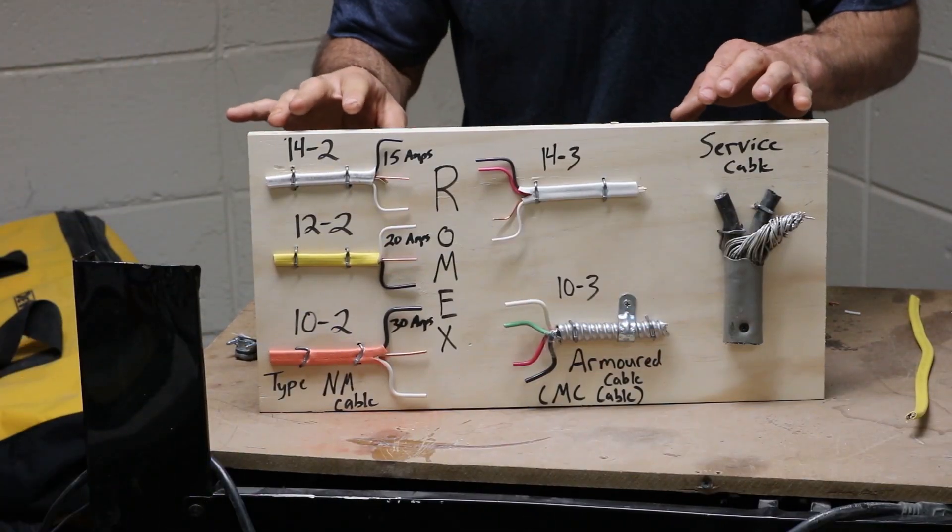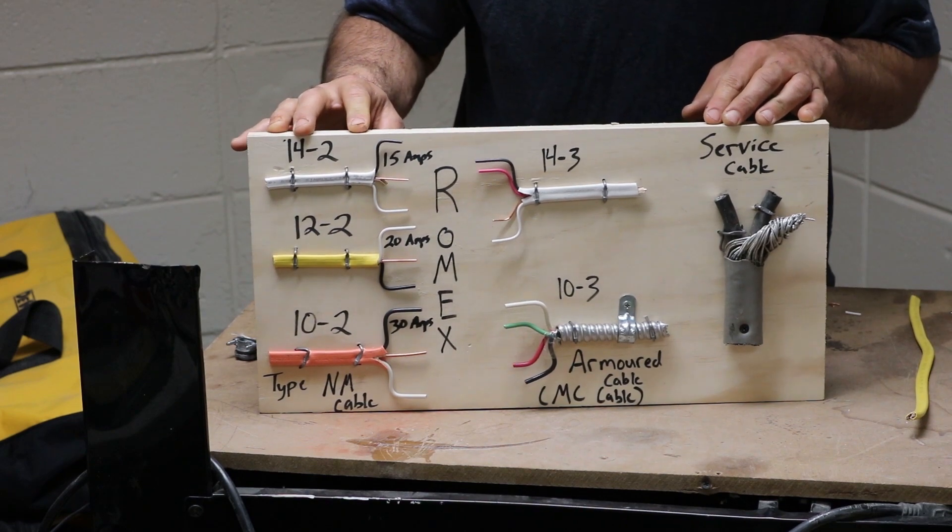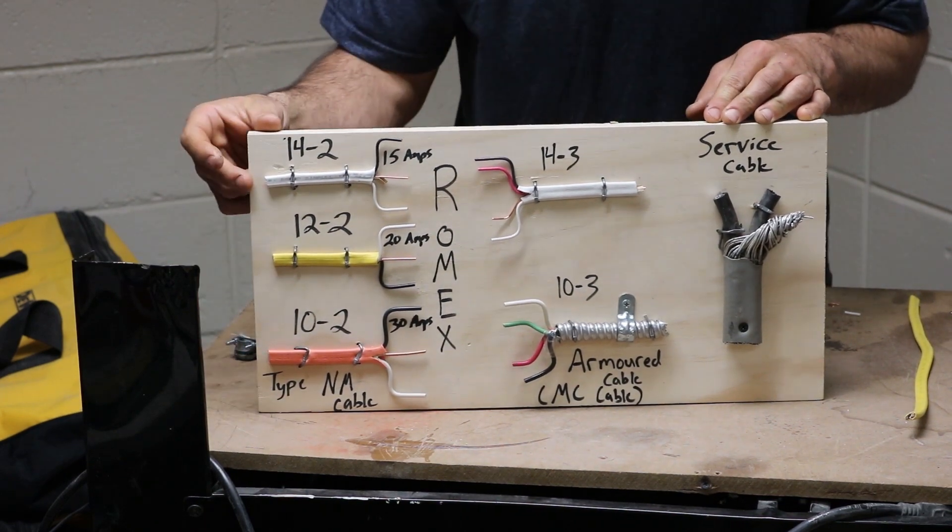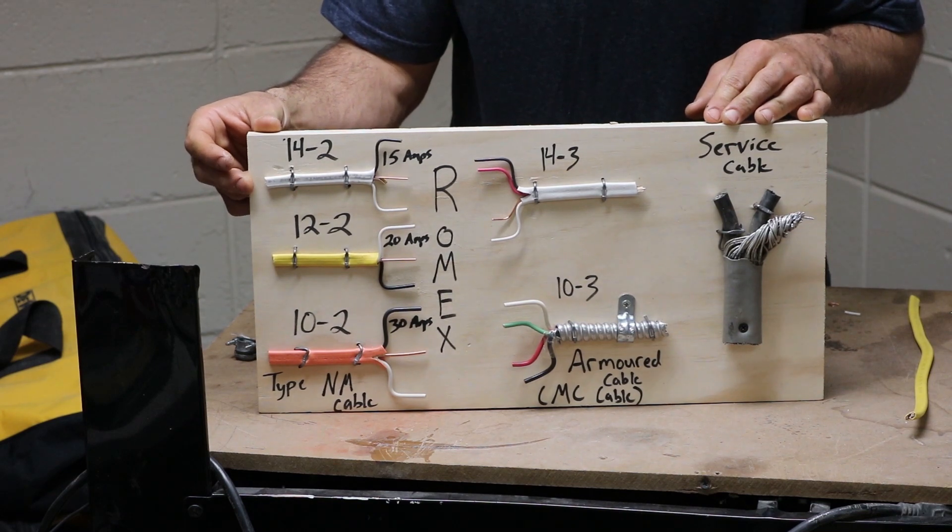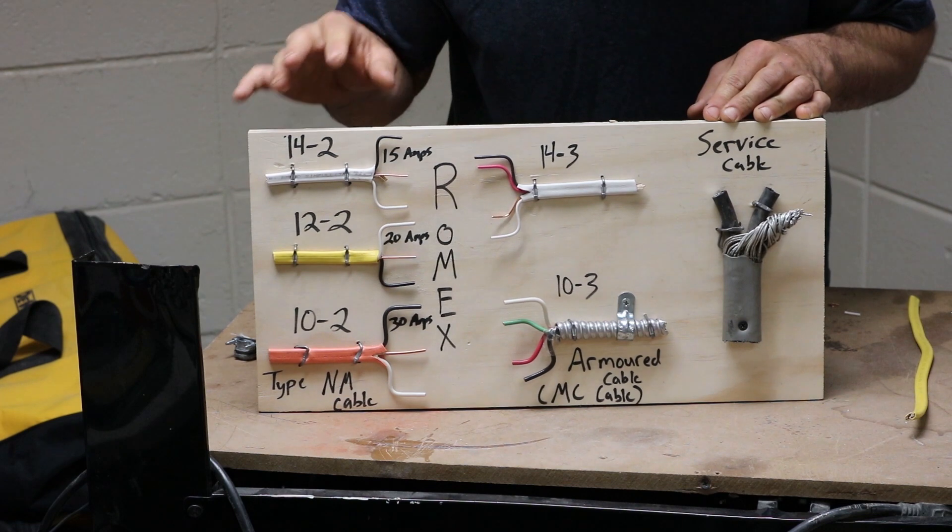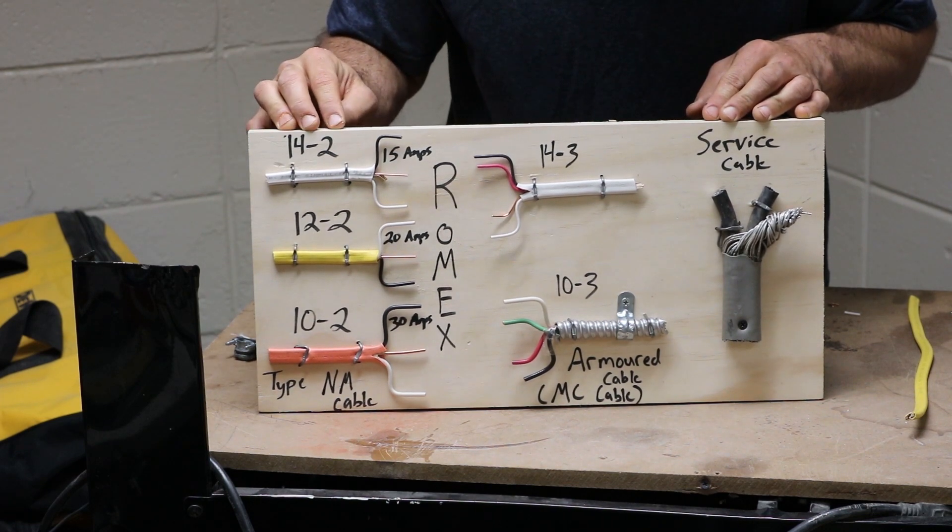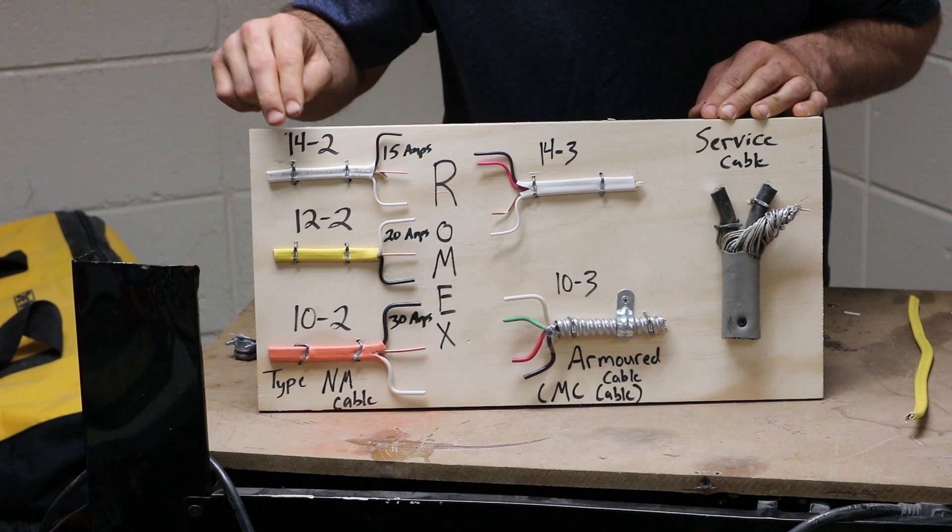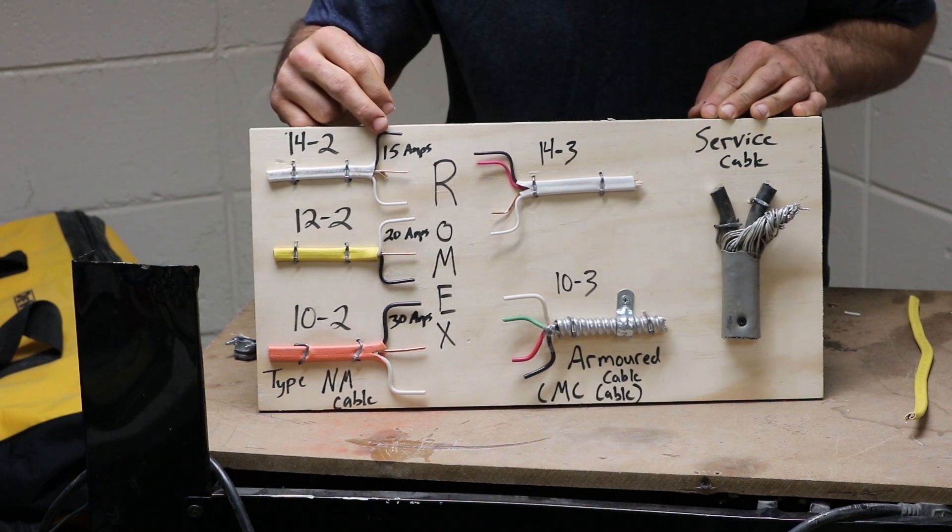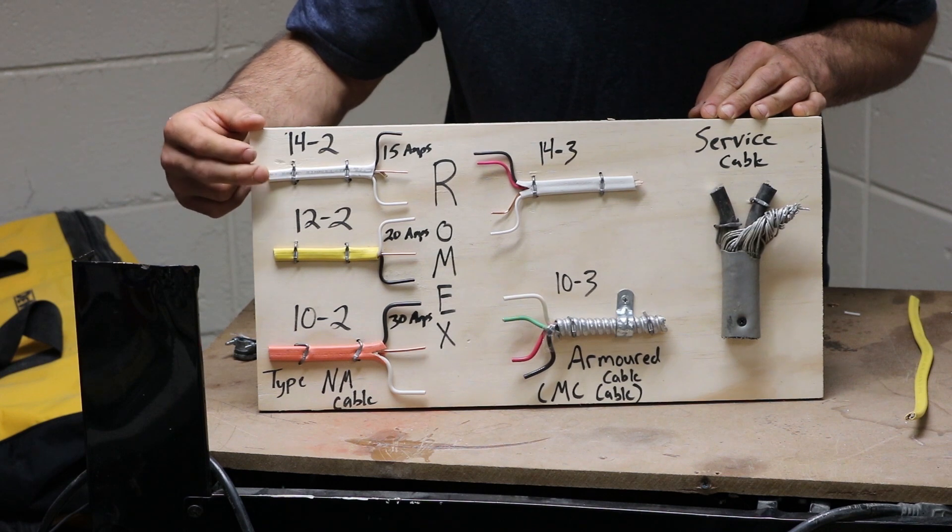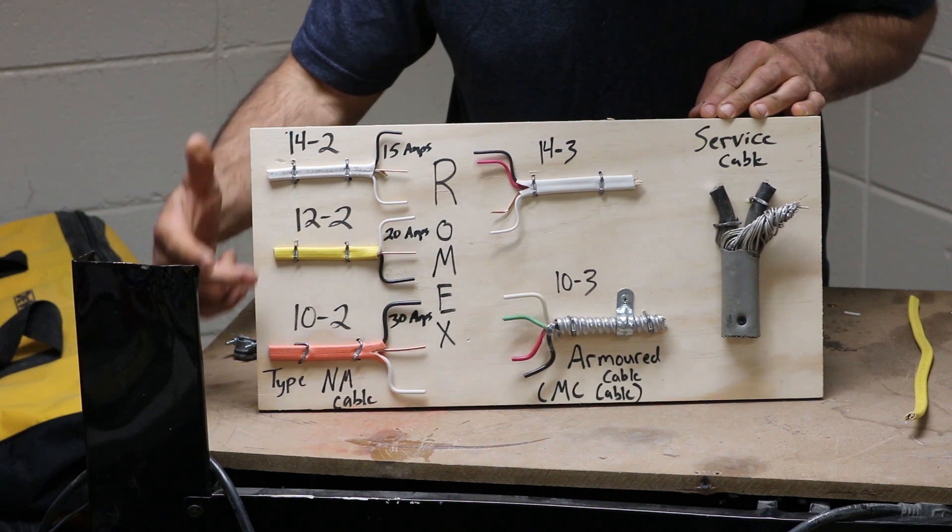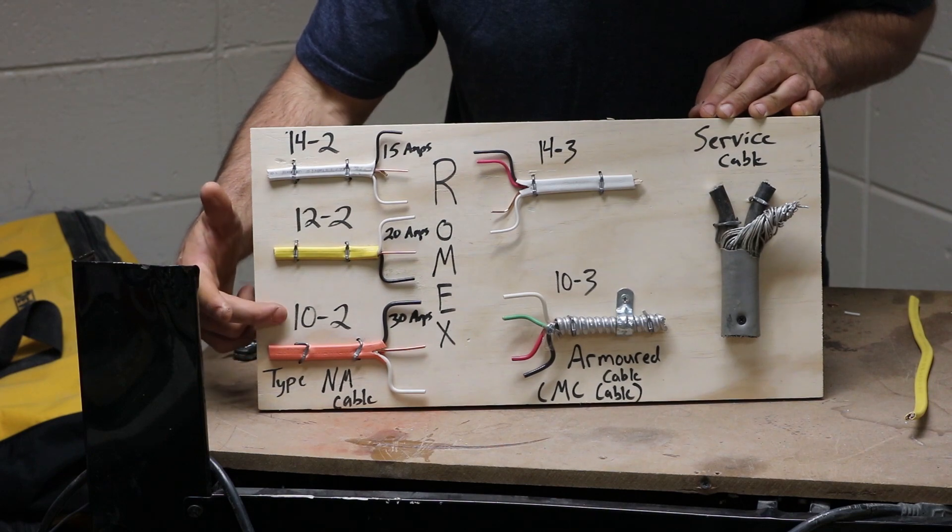Looking at this board, you can see there's a couple of different types of cables on here. On the left hand side, this is all type NM cable or non-metallic, and the trade name is going to be Romex. If you go into Home Depot, say Romex and they'll for sure know what you're talking about. The color of the different Romex denotes what gauge wire it is. White Romex is 14 gauge, yellow Romex is 12 gauge, and orange Romex is 10 gauge.